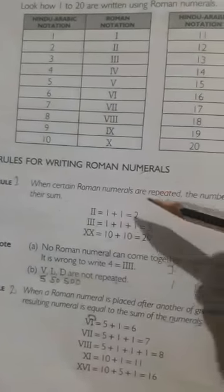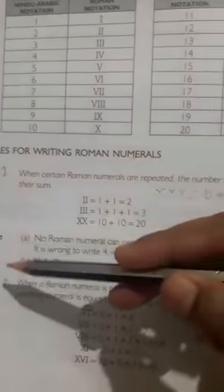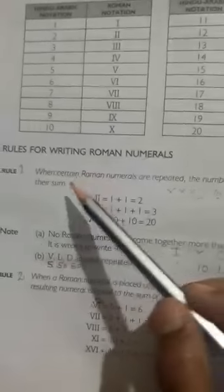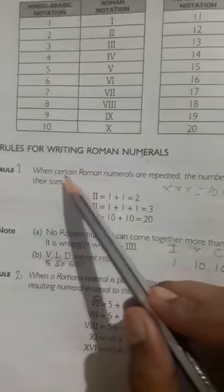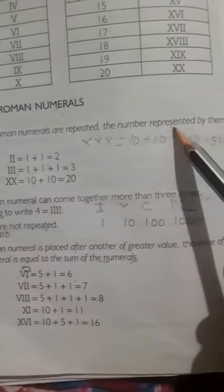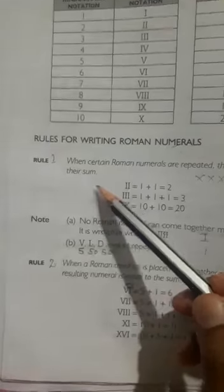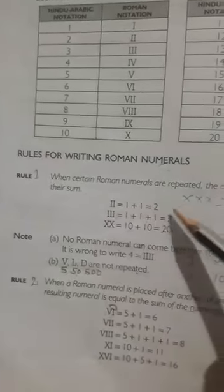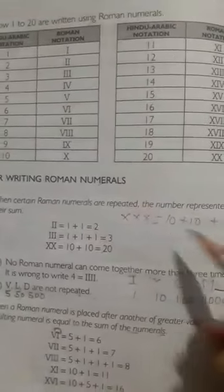Now let's discuss what these rules are. Rule 1: Repeating a symbol. When certain Roman numerals are repeated, the number represented by them is their sum. Repeating a symbol means addition, so if we are going to repeat any symbol...